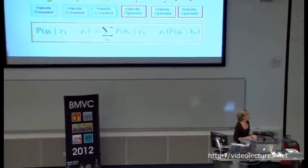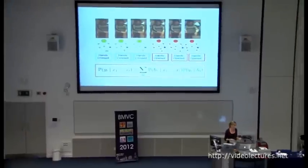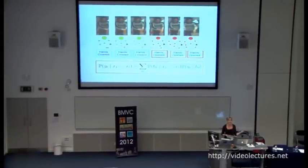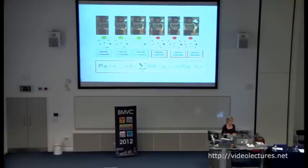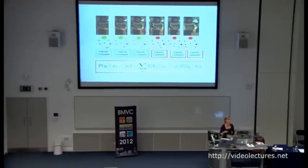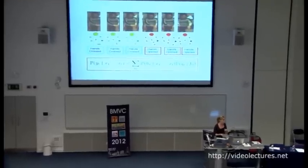Latent variables also play an important role in structure prediction problems. For example, in gesture recognition you can imagine there is a latent space of pose that is actually explaining your labels. When you use latent variables in the context of structure prediction, it's not that different from the classic mixture model, because what you are doing is predicting a label as a mixture of simpler distributions.